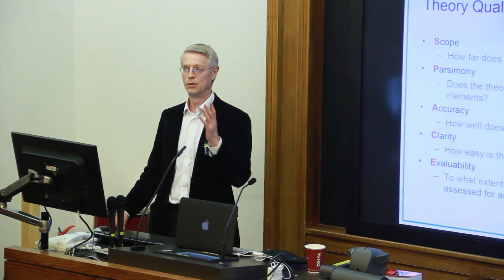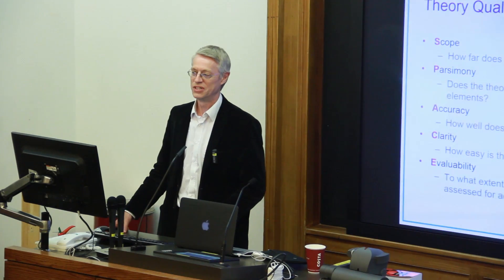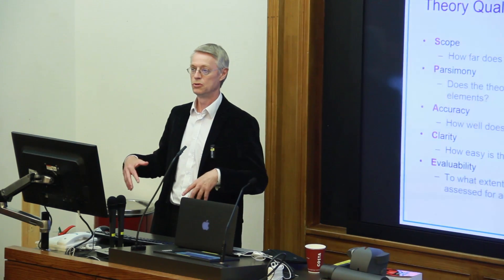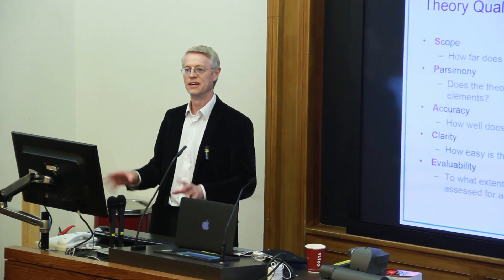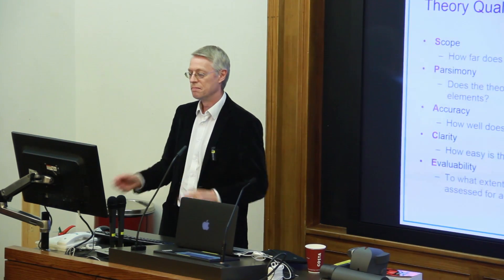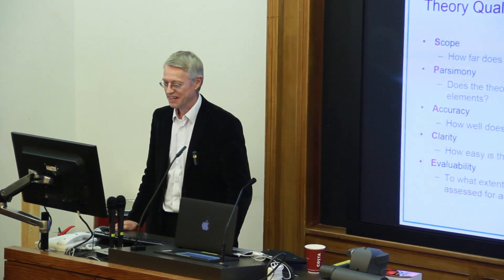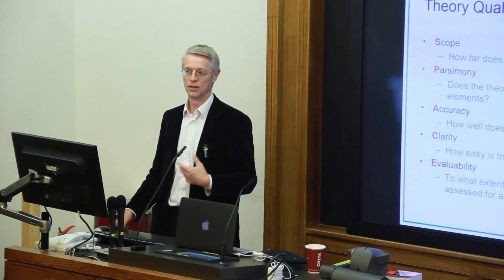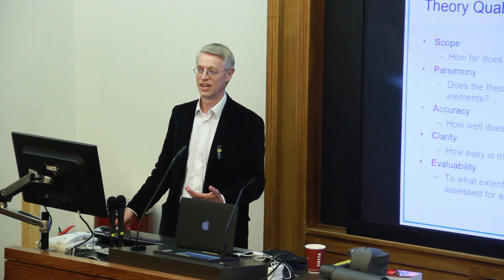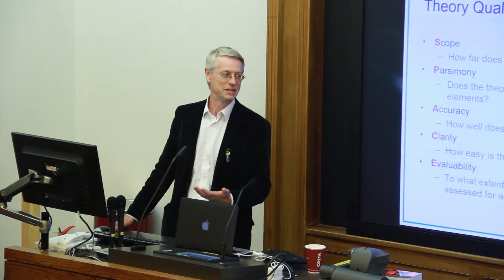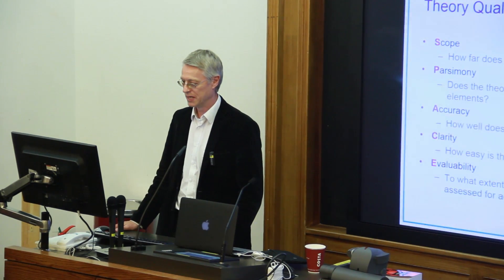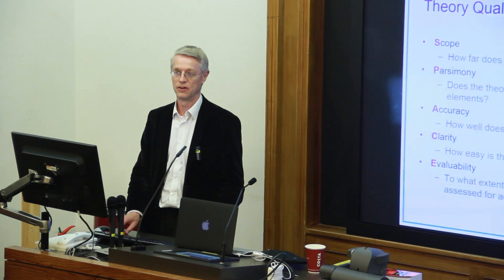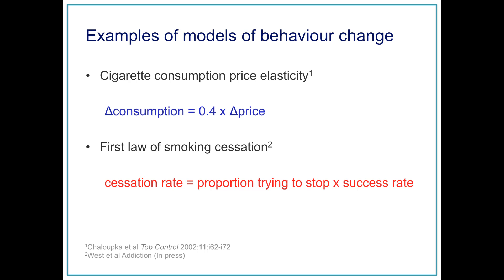Accuracy: the theory should fit the observable data. If you've got a theory which just doesn't work — which says things that are patently not true, which a lot of psychological theories do — then it seems to me you ought to go back to the drawing board. A classic example is the transtheoretical model of behaviour change, which simply doesn't fit the data. People who support it will say it may not fit the data, but it's a useful heuristic model — and maybe it is, maybe it isn't. Clarity: it should be easy to understand and apply. And they must be valuable — the propositions within the theory must be able to be assessed for accuracy.